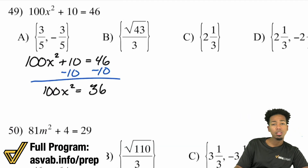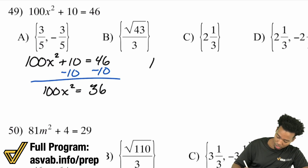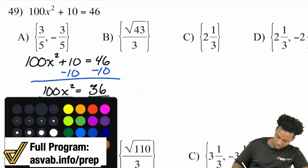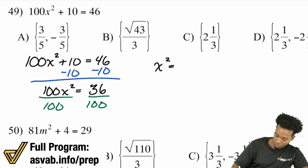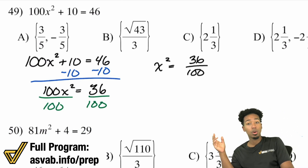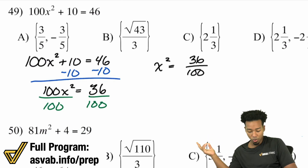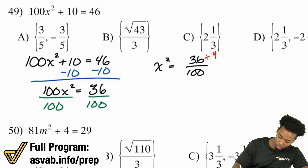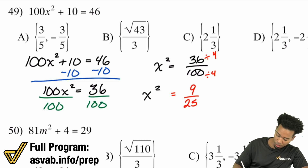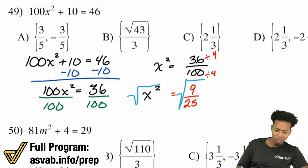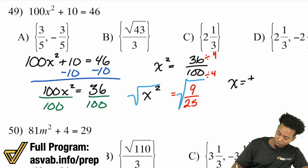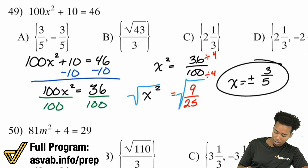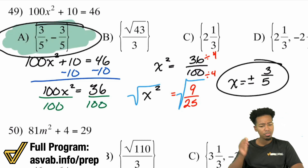From there, divide both sides by 100 to get x squared equals 36 over 100. You can simplify — both are divisible by 4 — giving x squared equals 9 over 25, which is still a perfect square. Take the square root of both sides and you get x equals plus or minus three over five. That's answer A.